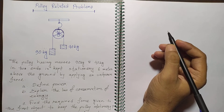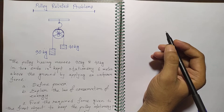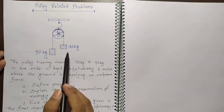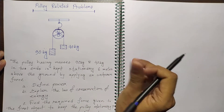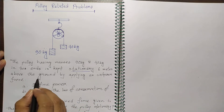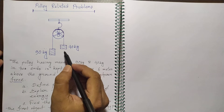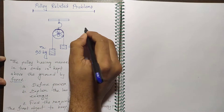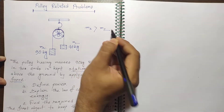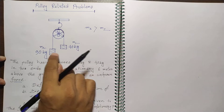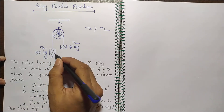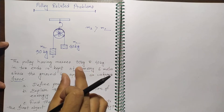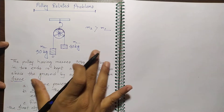Assalamu alaikum, my dear viewers. Welcome to another beautiful class. In this lesson I shall explain a pulley-related problem from physics. A pulley has masses of 90 kilogram and 40 kilogram on its two ends, kept stationary 6 meters above the ground by applying an unknown force.